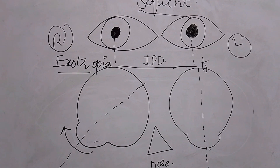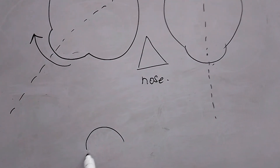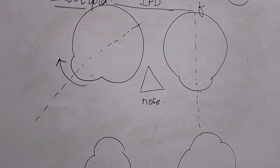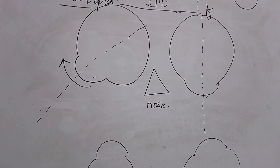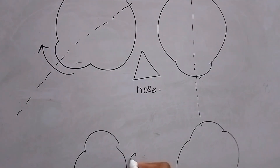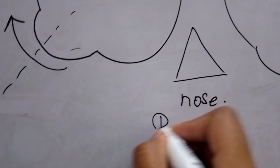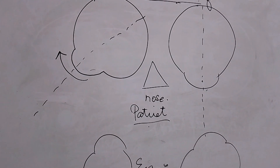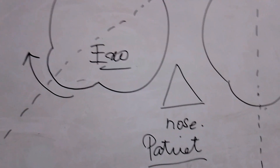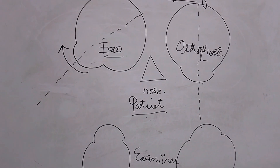To measure the interpupillary distance, you should know a single protocol: the examiner and the patient should be in front of each other at the same level. This is the examiner who is going to measure the IPD, and this is the patient. You can see this eye has moved outward — there is exotropia — while this eye is orthophoric, or straight.